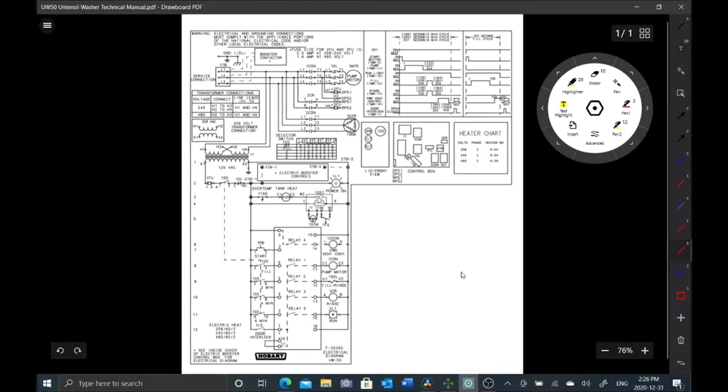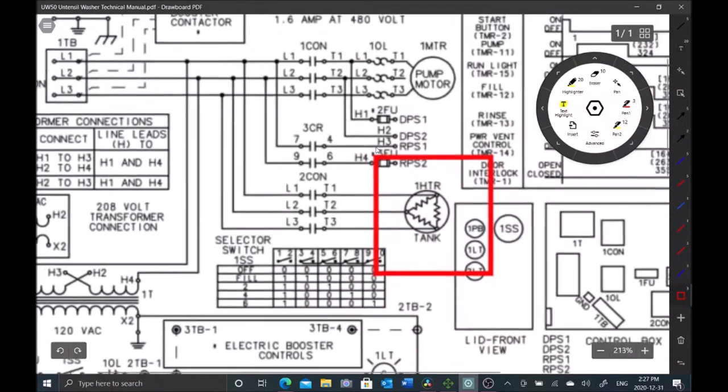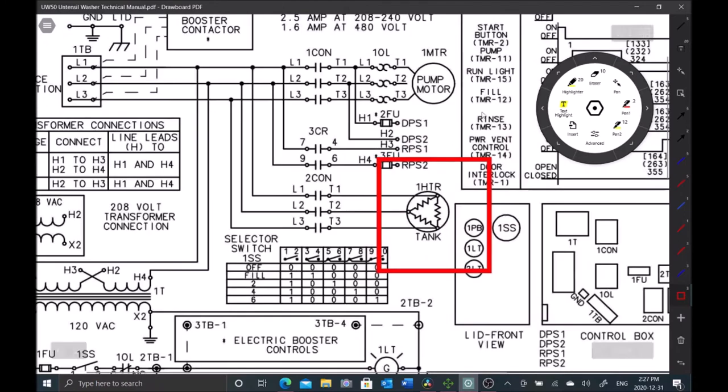We're going to start by identifying the load. In this case that's this heater right here. I'm just going to draw where the power should be. I always find working backwards is the easiest way. Find the load and then just follow it back.